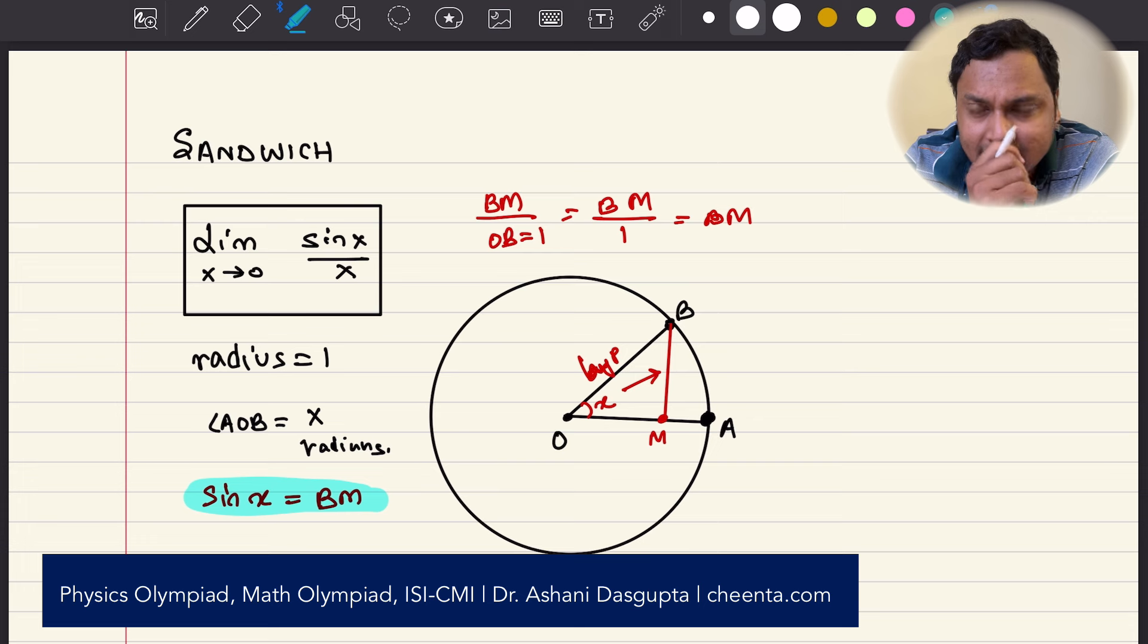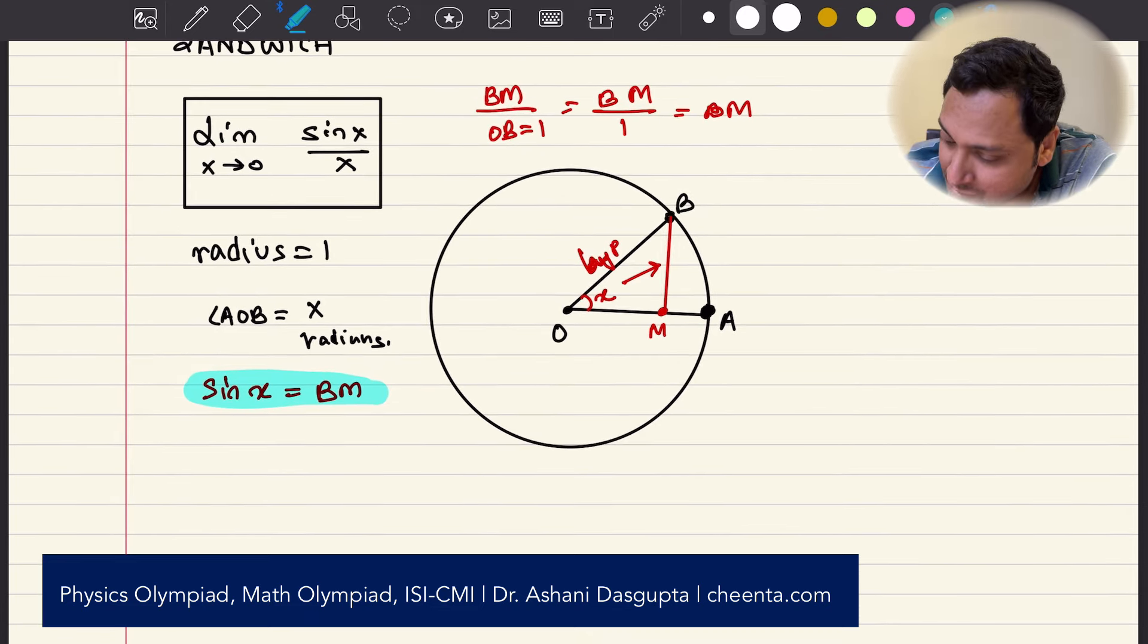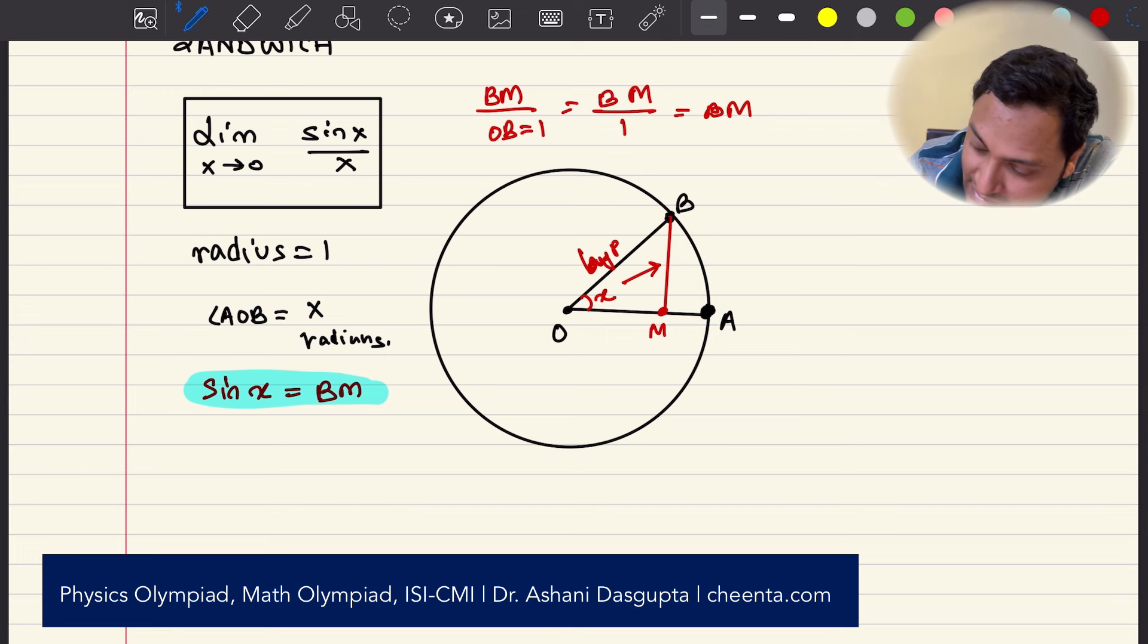Now with this in mind, let us figure out a way to calculate sin x over x. So to do that, we will need to understand a bit more about the unit circle. What we will do is we will draw a perpendicular, a tangent line that is from the point A and extend OB to meet that tangent line at T.